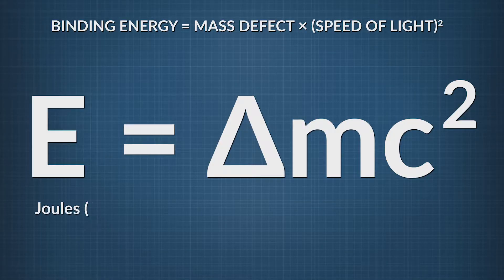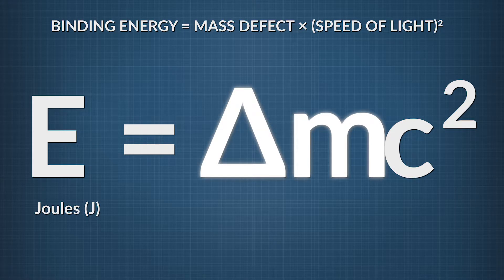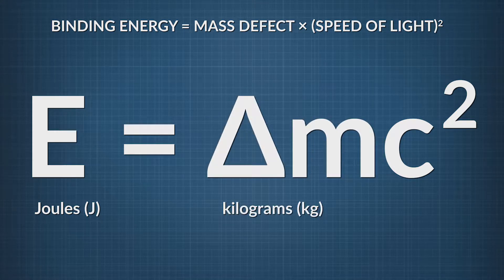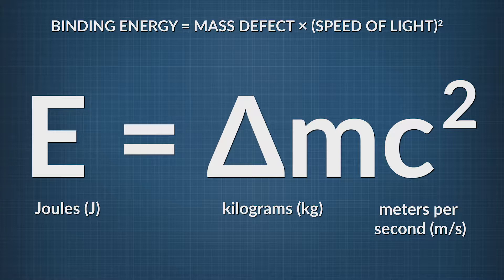Remember, E is binding energy measured in joules, m is for mass defect measured in kilograms, and c is the speed of light, which is 300 million meters per second. If you square it, making it an even larger number, even a miniscule mass defect is equal to a very large amount of energy.